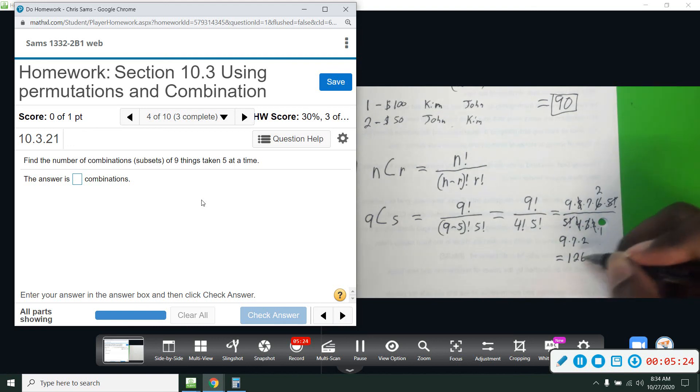So there's a hundred and twenty-six ways to make groups of five from nine objects when the order is not important.